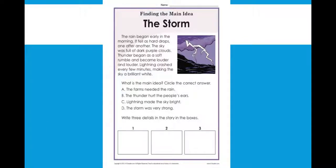So this story is called The Storm. The rain began early in the morning. It fell as hard drops, one after another. The sky was full of dark purple clouds. Thunder began as a soft rumble and became louder and louder. Lightning crashed every few minutes, making the sky a brilliant white. So the first thing we need to look for is the subject. So what is the story about? The storm. So the storm would be my subject.